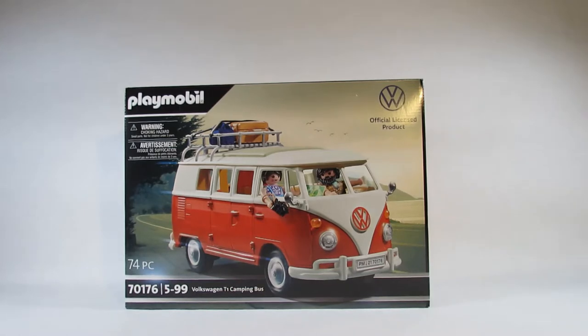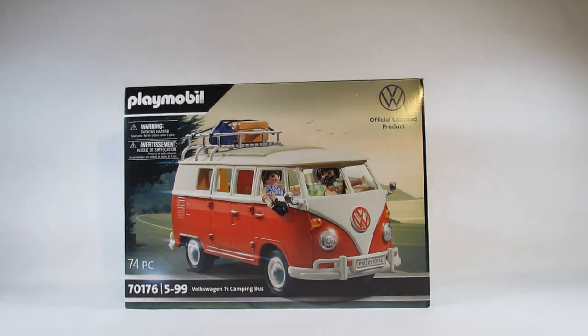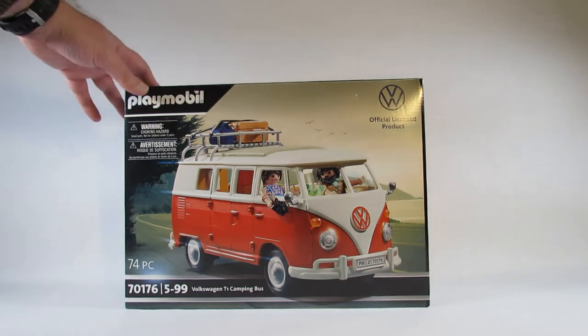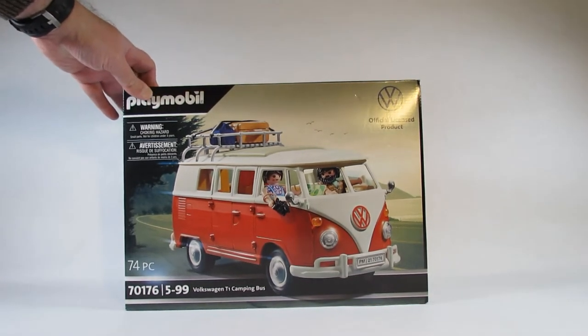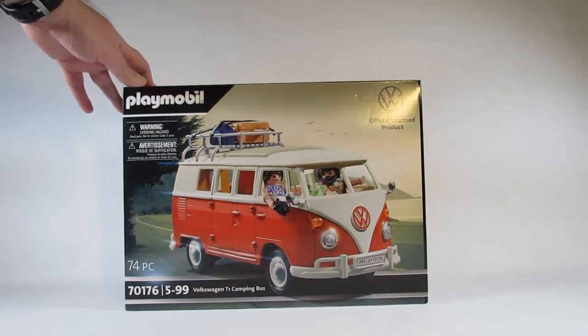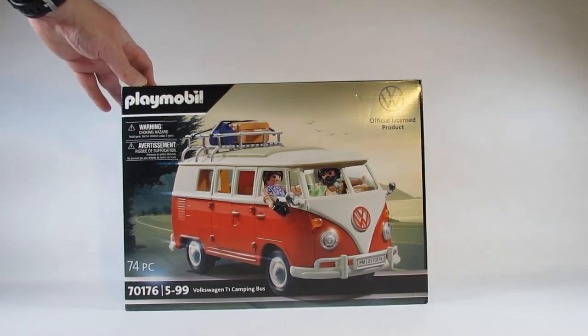Here is the box for the Playmobil set 70176 Volkswagen T1 camping bus. This is an official licensed product from Volkswagen. This was made in Germany in 2021. I ordered this in 2021 from an online store. The cover says for ages 5 to 99, so after I'm a hundred I don't know what I'll do.